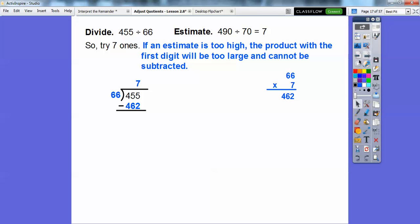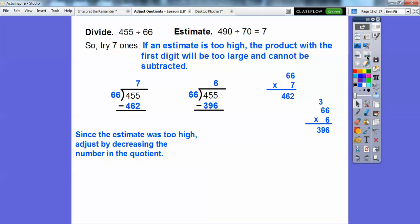This is what this means. If we multiply 66 times 7, we get 462. 455, we can't take away 462 because this number's bigger, which means this number's too big. We estimated it a little bit too big. So when it's too high, adjust it by decreasing. We'll go down to 6.